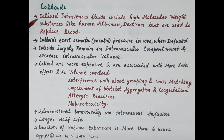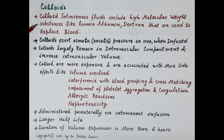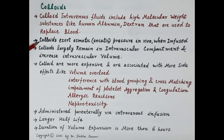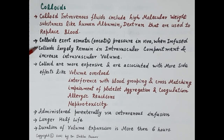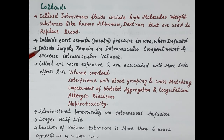The second type of plasma volume expanders is colloids. Colloid intravenous fluids include high molecular weight substances like human albumin and dextran that are used to replace blood. Since colloids consist of high molecular weight substances, they exert osmotic or oncotic pressure in vivo when infused. As a result, colloids largely remain in the intravascular compartment and increase intravascular volume.